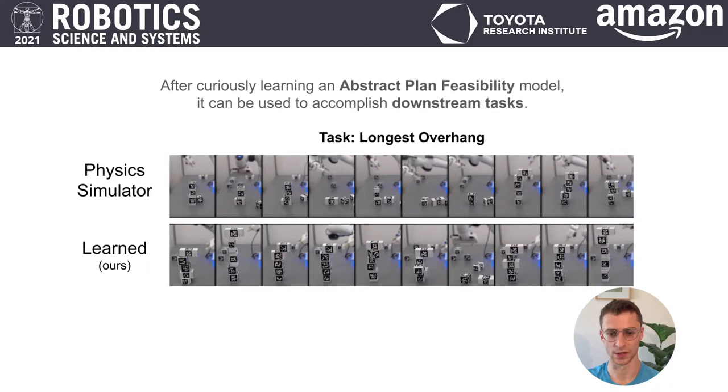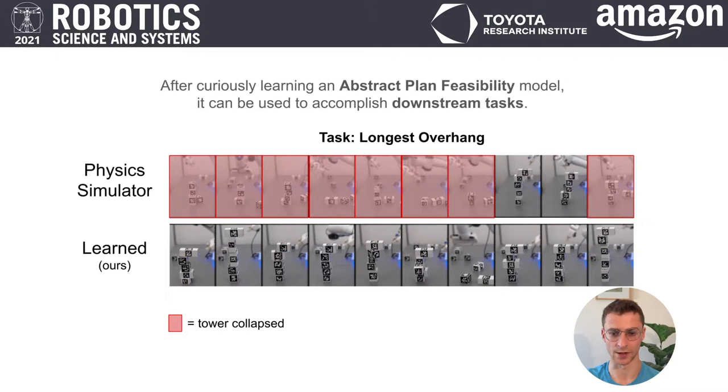Here are our experimental results for predicting plan feasibility for the longest overhang task. Predicting plan feasibility with the simple physics simulator leads to many unstable towers because of unmodeled real-world noise in the system. Our learned model outperforms the physics simulation, resulting in fewer unstable towers, as it is able to capture noise in the real-world system.